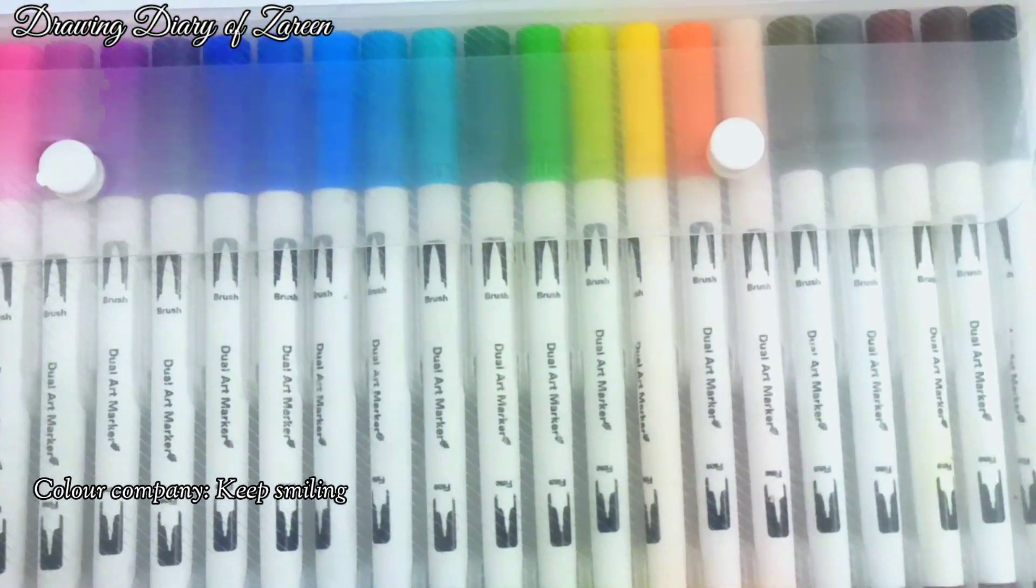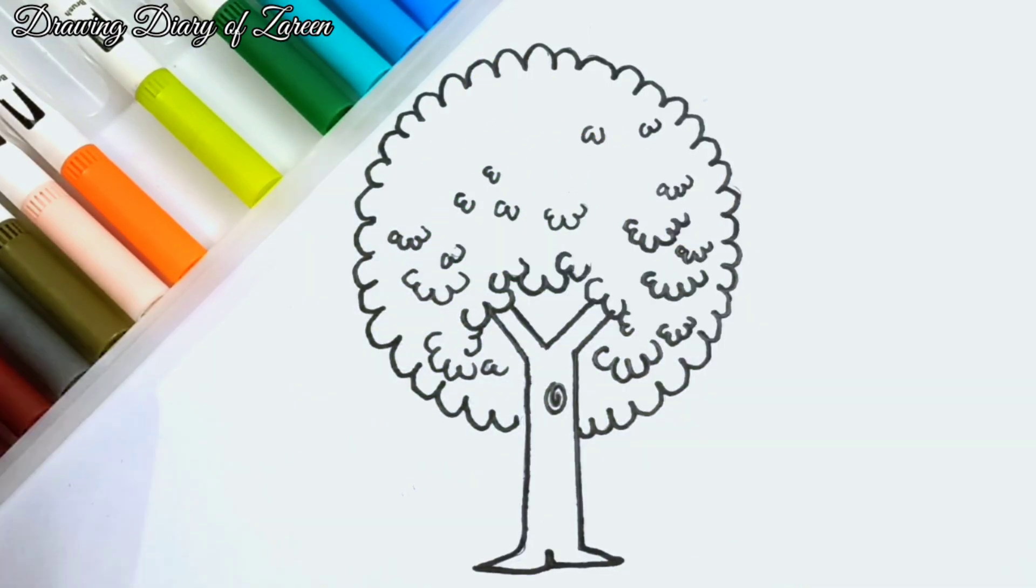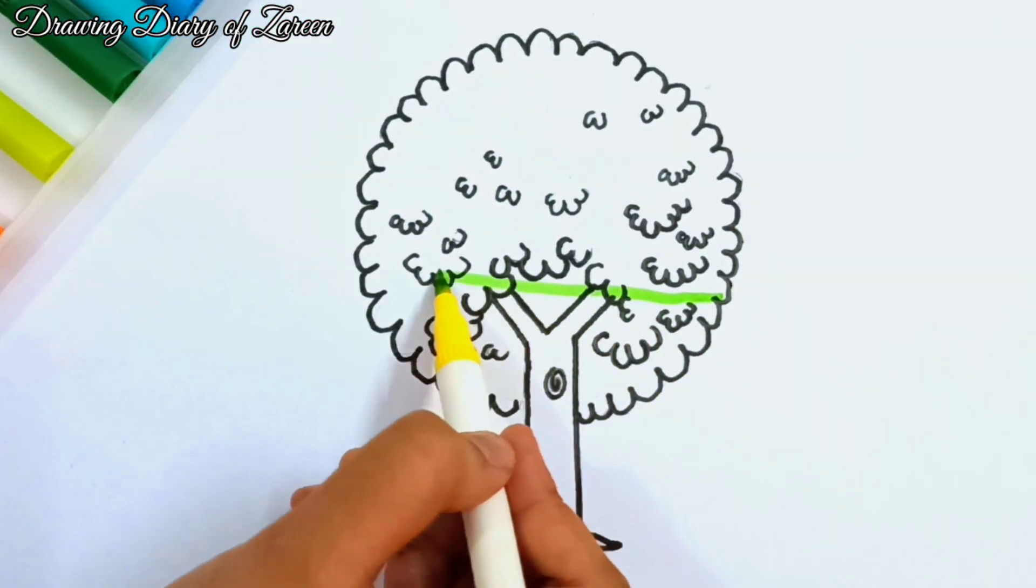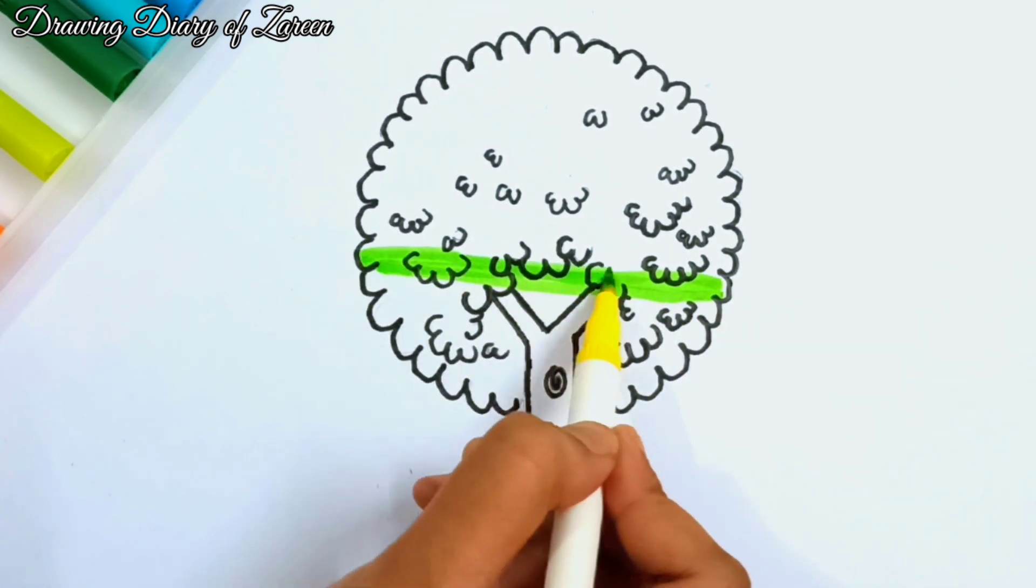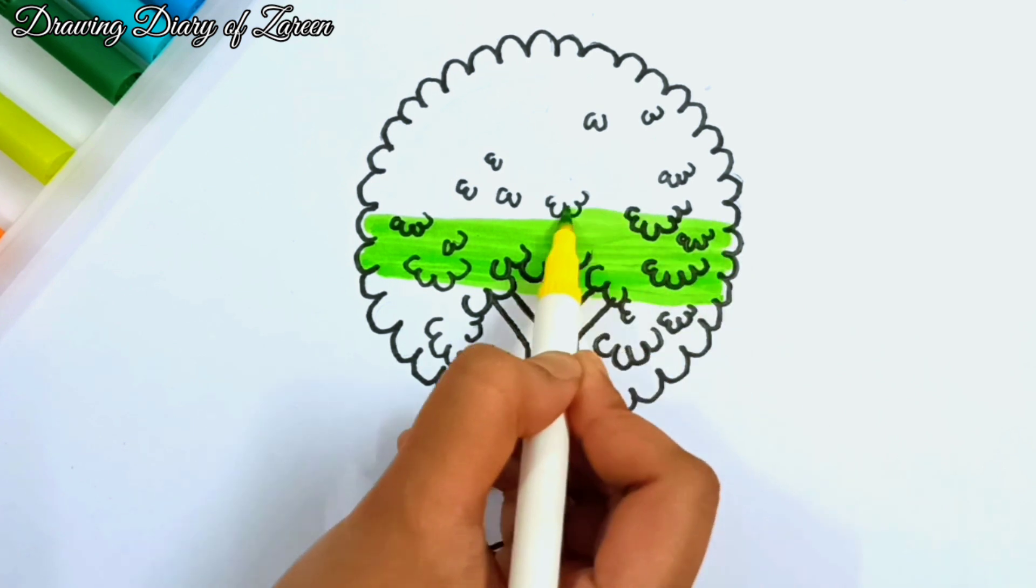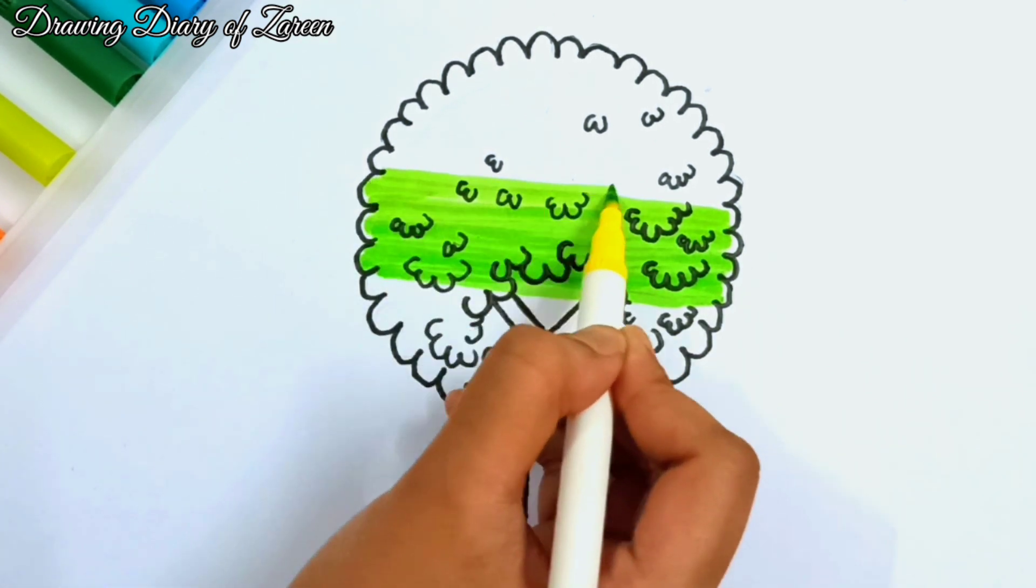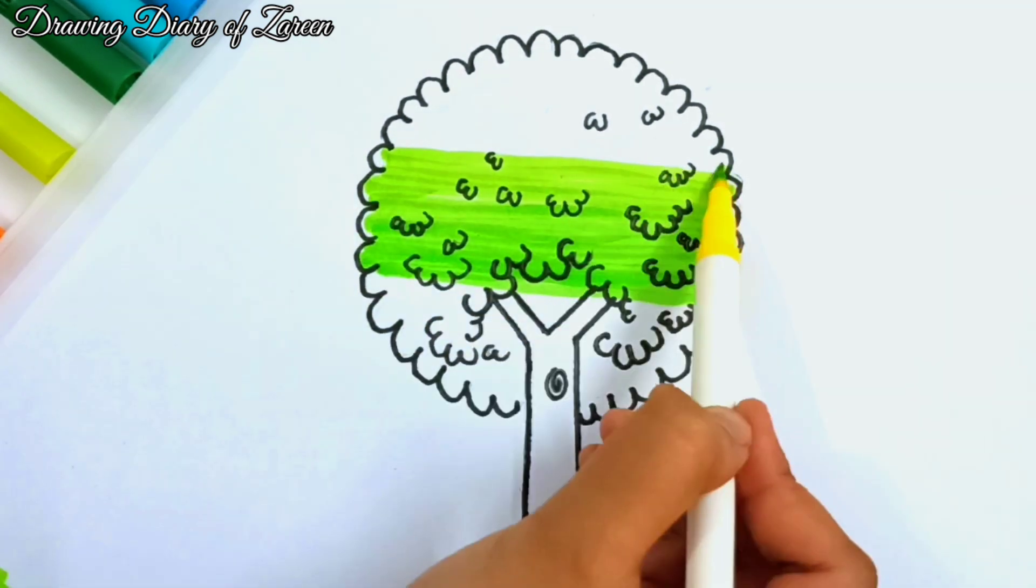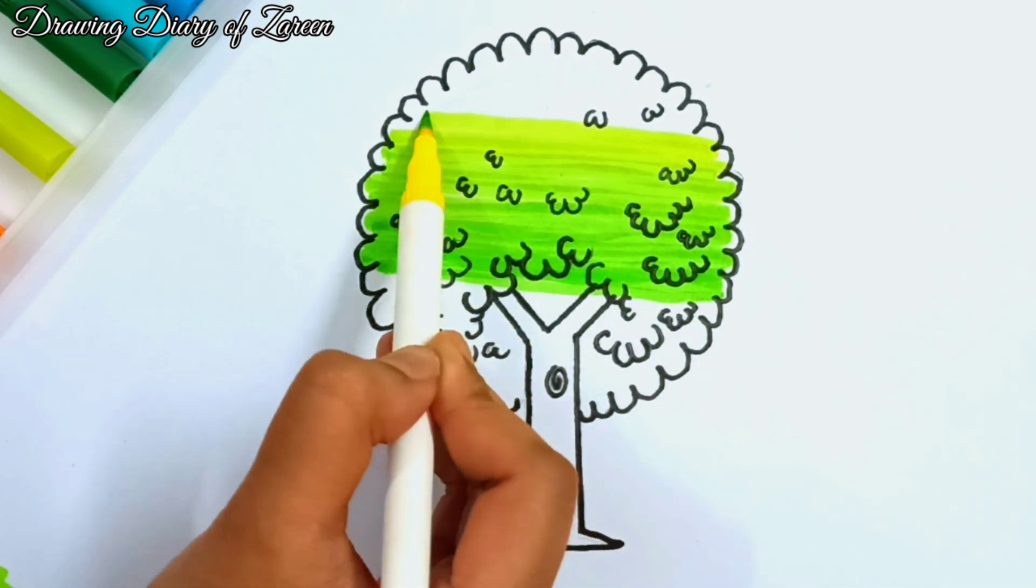Here I'm using brush pen to color the tree, but you can use any other type of colors. So our tree will be colored in three steps. First step will be yellow, the middle one is light green, and lastly we will add dark green.